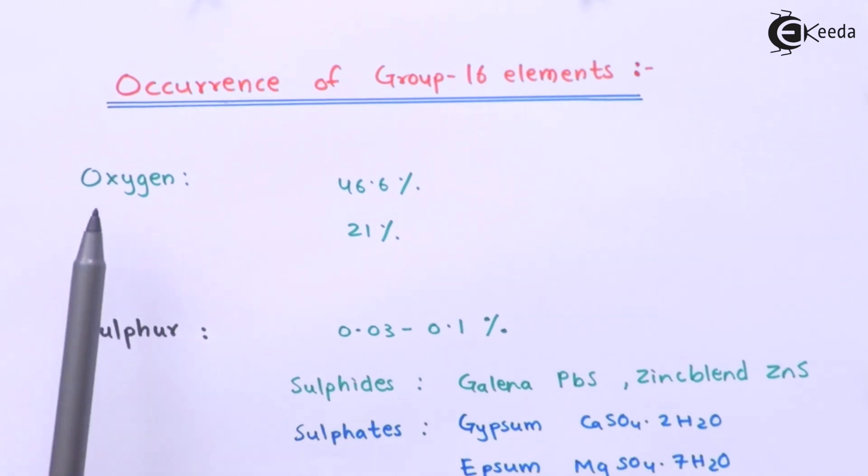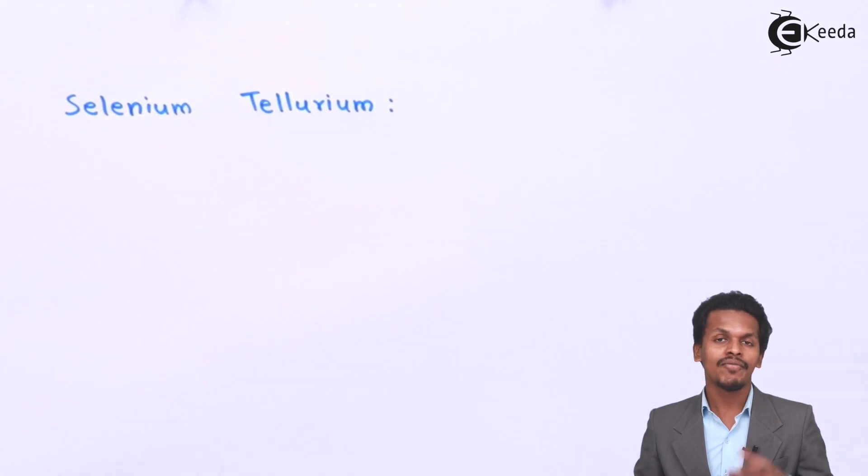This was related to oxygen and sulfur. Now let me talk about the next elements. These two elements, selenium and tellurium, are basically found in the form of metal selenides and metal tellurides. Now let me talk about the last one, polonium.